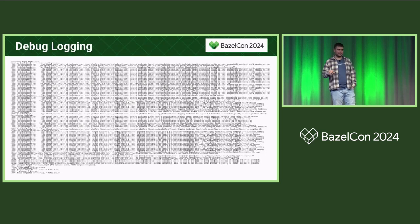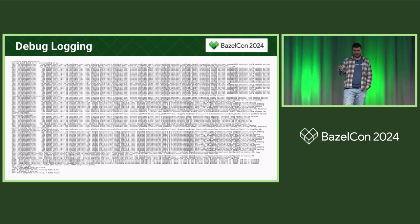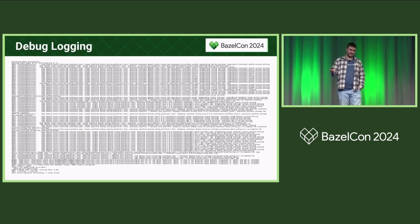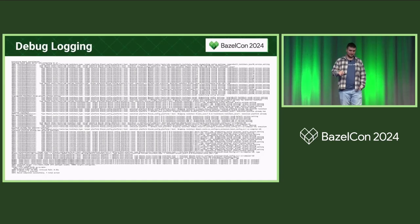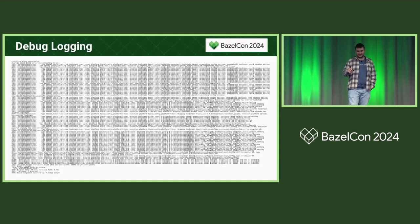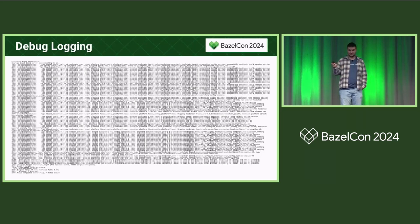So next, let's look at toolchain resolution debug. This is what the output looks like in Bazel 6 and before. You don't have to look at this in detail — it's just a shock image. What you see is there's a lot of duplicate information and it's really hard to understand what's going on.